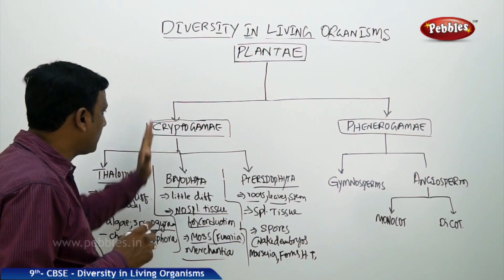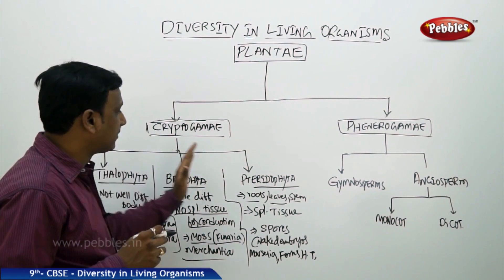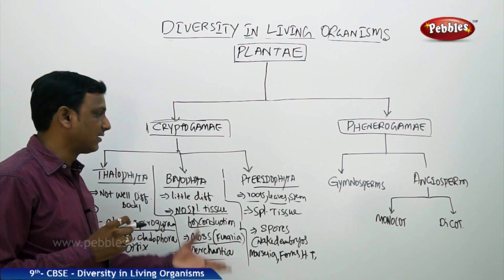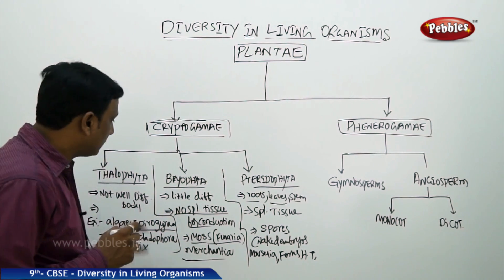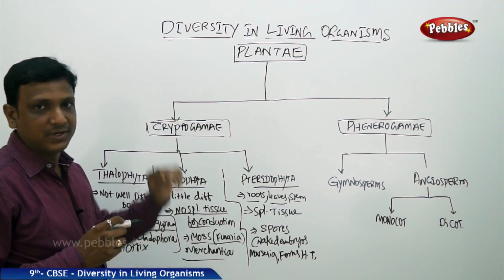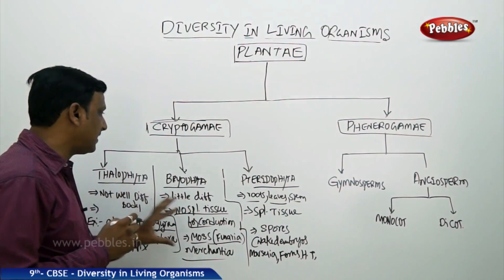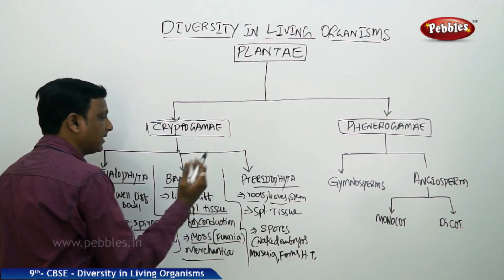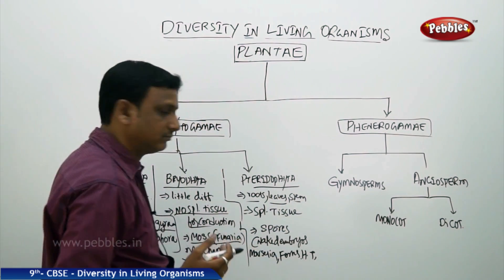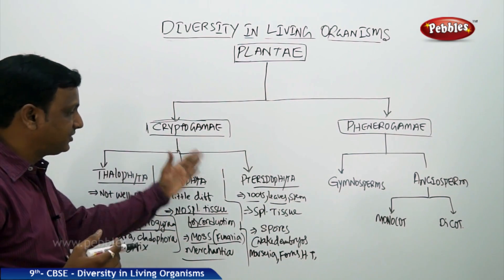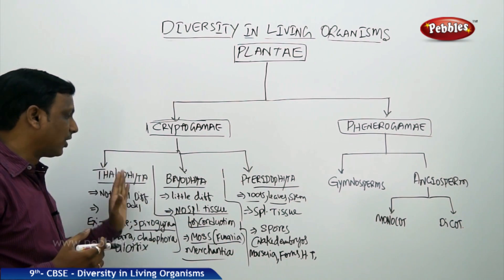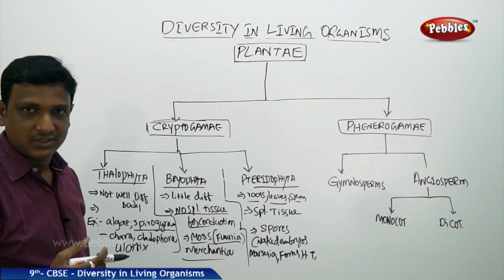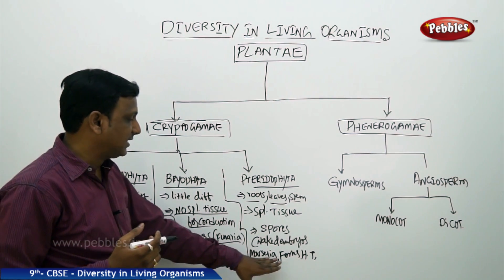But what do these three — Thallophyta, Bryophyta, and Pteridophyta — have in common to be kept under Cryptogamae? The common thing is their mode of reproduction: they have naked embryos and they reproduce by spores. Among these three, Thallophyta and Bryophyta do not have a differentiated body structure, whereas Pteridophyta has a well-differentiated root, stem, and leaf distinction. However, all three reproduce by spores. Examples of Pteridophyta are Marsilea, ferns, and horsetails.